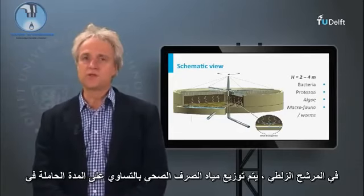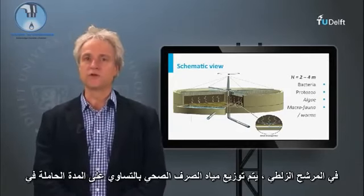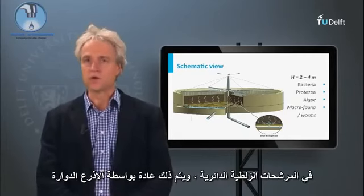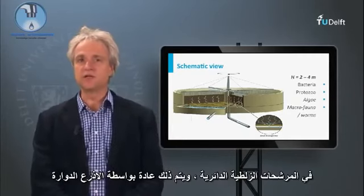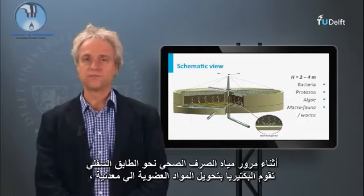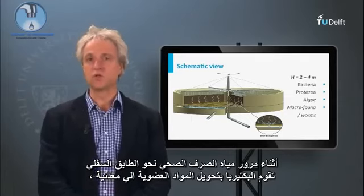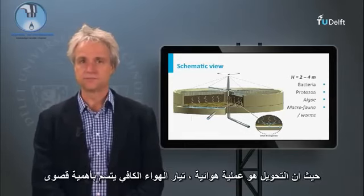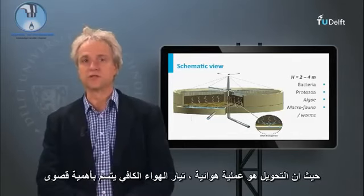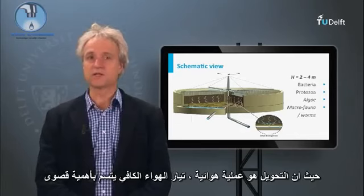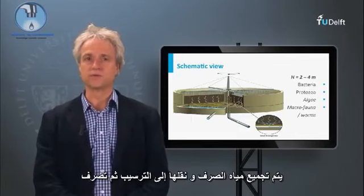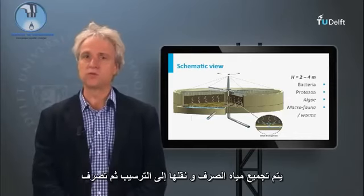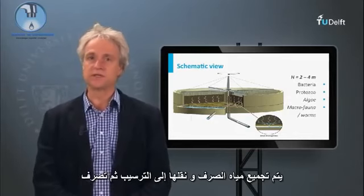In a trickling filter, the sewage is equally distributed over the support material at the top part of the filter. In a round trickling filter, this is generally done by rotating arms. During passage of the sewage towards the bottom floor, bacteria mineralize the organic matter. Since the conversion is an aerobic process, adequate air supply is of utmost importance. The drain water is collected and conveyed to a clarifier and subsequently discharged.